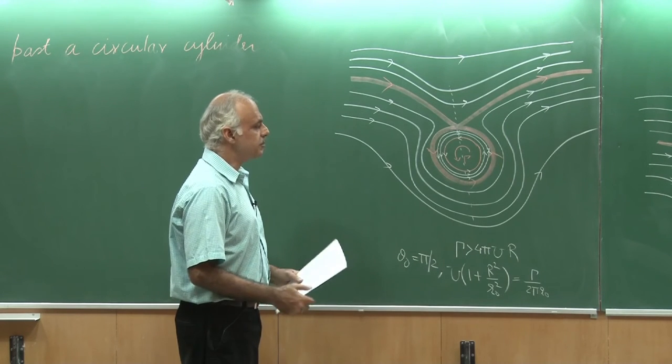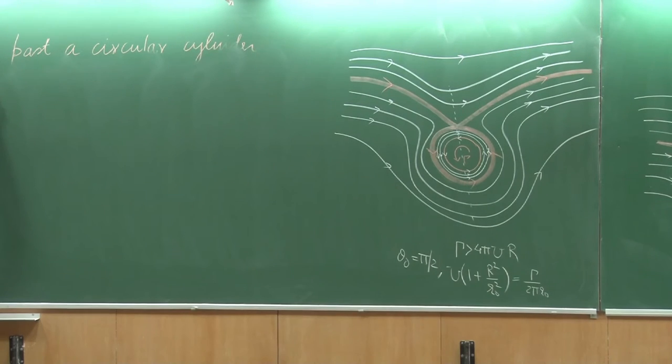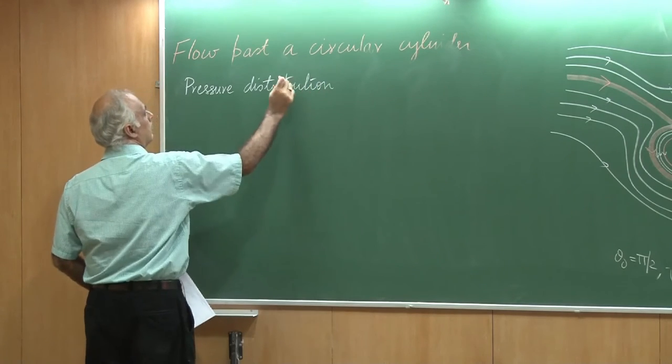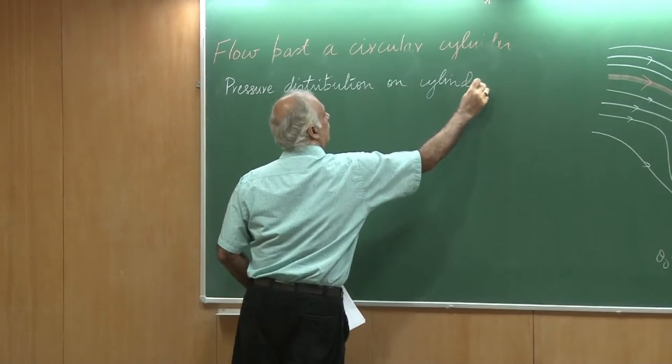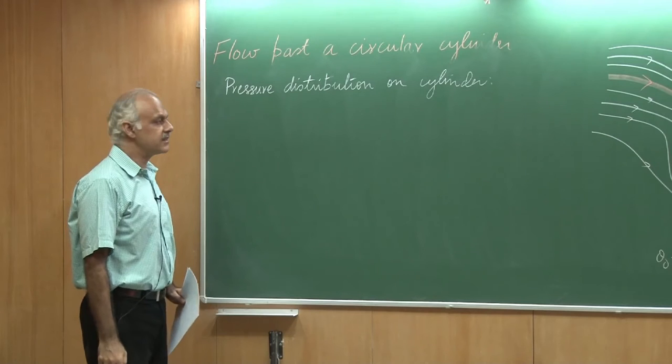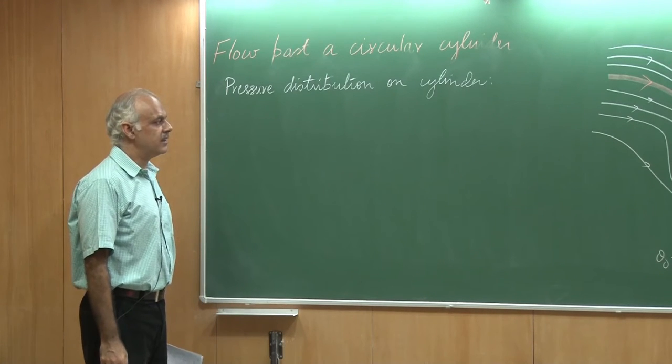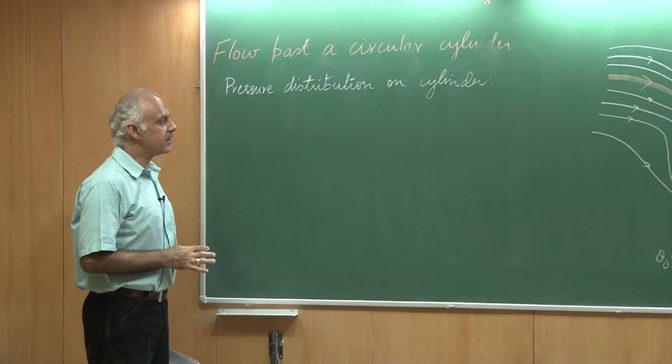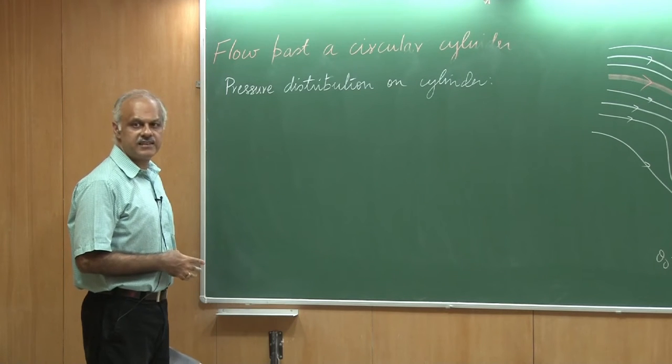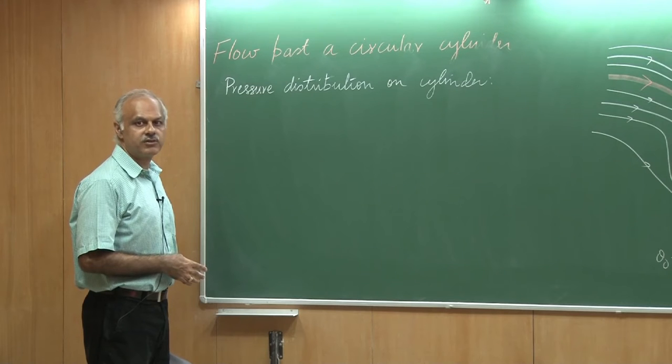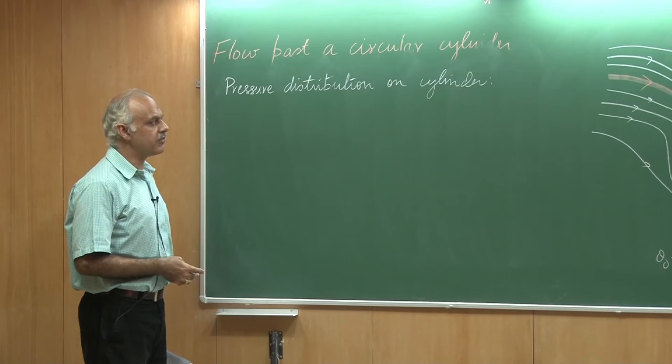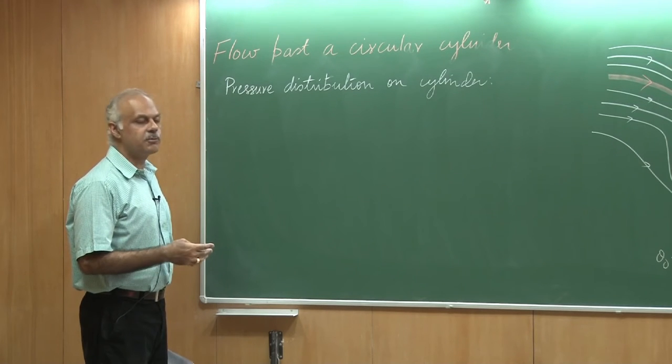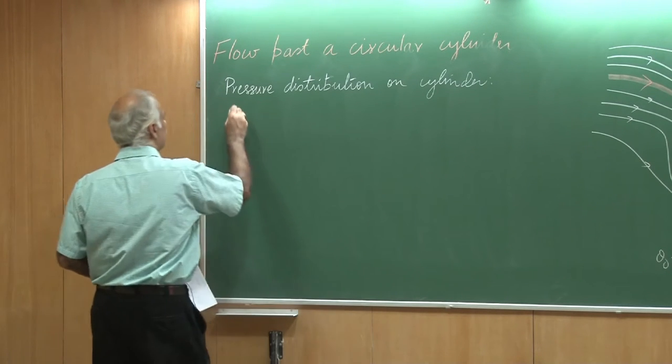Let us now try to calculate the pressure distribution on the surface of the cylinder. I will use the Bernoulli's equation because this is an irrotational flow. Remember, even a free vortex is an irrotational flow. However, there is a singularity at r equal to 0. So, this is an irrotational flow. It is inviscid, incompressible, steady. I can apply the Bernoulli's equation between any two points in the flow, not necessarily along the streamline. I will take a point which is far upstream, P_∞ values and U_∞ values and then I will take a point on the surface of the cylinder. If I do that, I would be able to write the following.